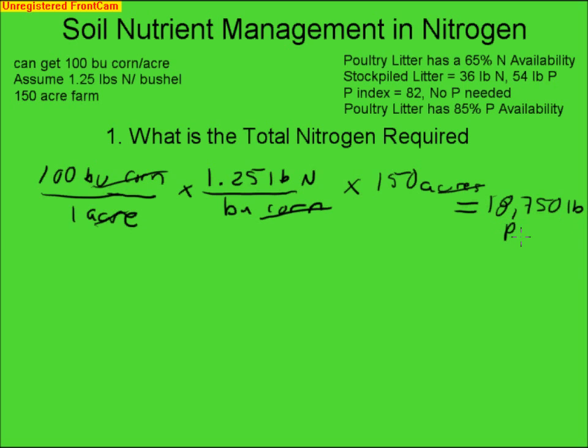This is plant available nitrogen, which means it is the amount of active nitrogen we need in the crop to grow this plant.